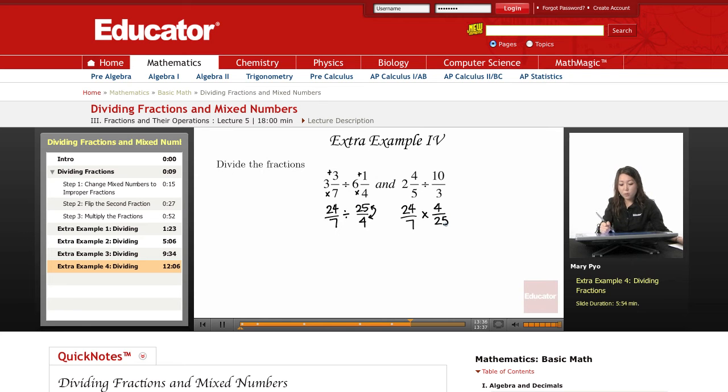And you're going to see if you can cancel any of these numbers out. Make sure that one number is the numerator and another number is in the denominator position. So 7 with 4, they have no common factors because 7 is a prime number. And then 24 and 25 also have no common factors.